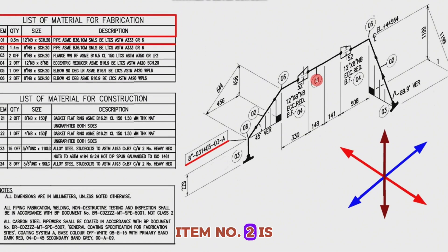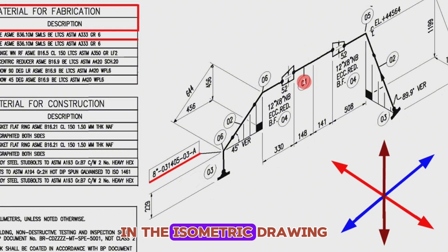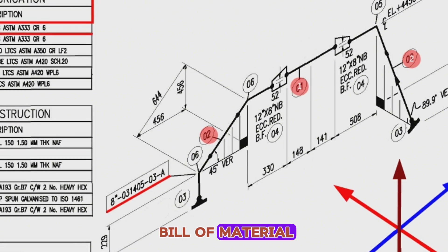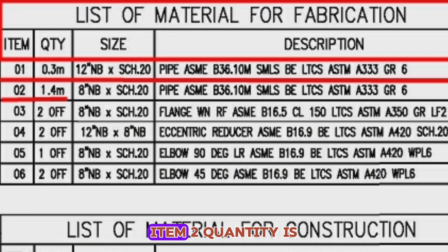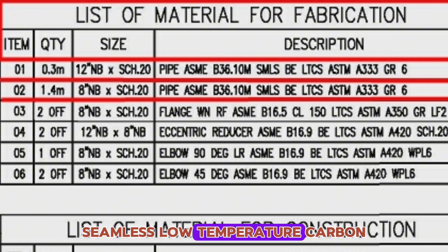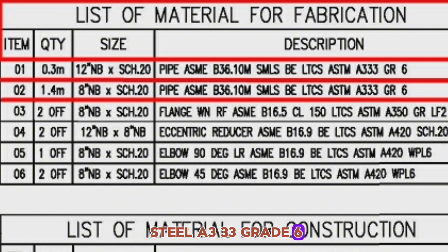Item number 2 is shown in two places in the isometric drawing. Let's look at the bill of material. Item 2, quantity is 1.4 meters, size is 8-inch NB, schedule 20, pipe ASME B36.10M seamless, low-temperature carbon steel, A333 grade 6.